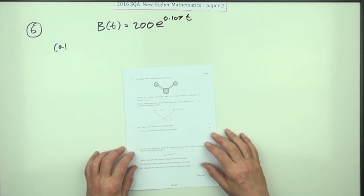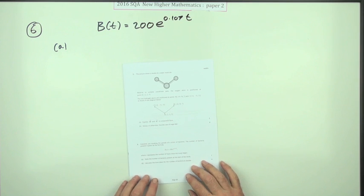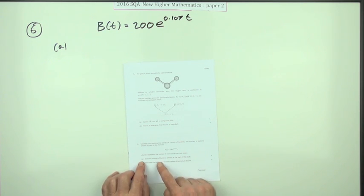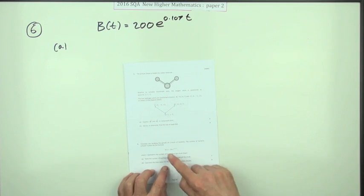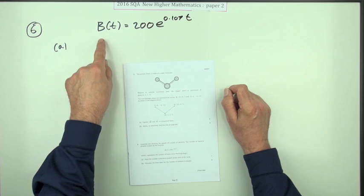Number six from paper two of the 2016 New Higher exam. There we go, the little growth equation here, five marks. Part A simply says state the number of bacteria present. This little equation tells you the number of bacteria you'll find after T hours.